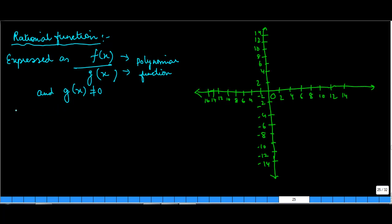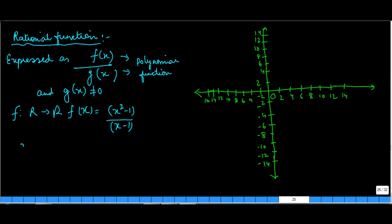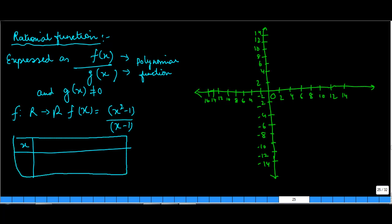So let us look at this. If suppose you define a function r, where x is equal to x squared minus 1 upon x minus 1. And the values of x which we have — keeping it simple, I am not taking too many values, I am just taking 3 of them. Let us say the value of x is 3, 4, and 5.